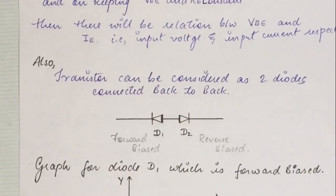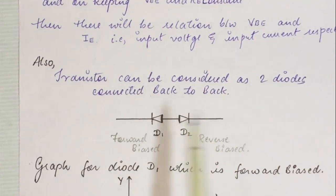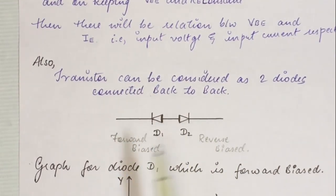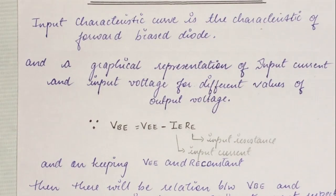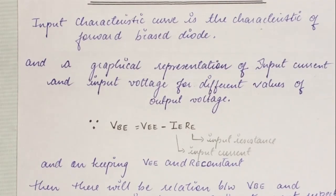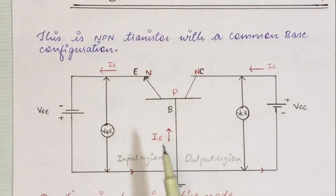Now for the input characteristic curve: a transistor can be considered as two diodes connected back to back. Diode D1 can be considered as the emitter-base junction and diode D2 as the collector-base junction. Since we are connecting the input circuit in forward bias, the input characteristic curve of BJT can be considered as the characteristic curve of a forward biased diode.